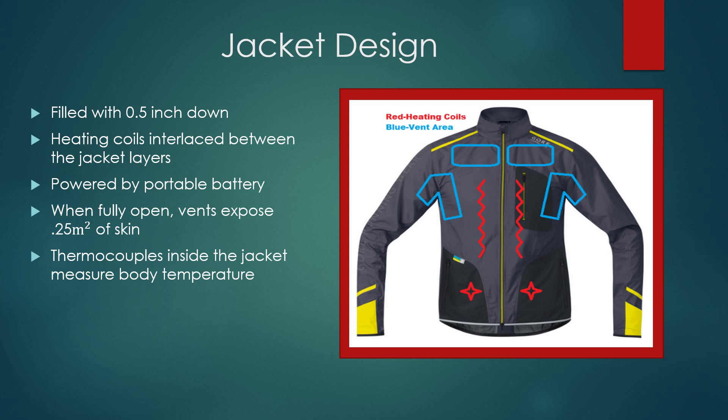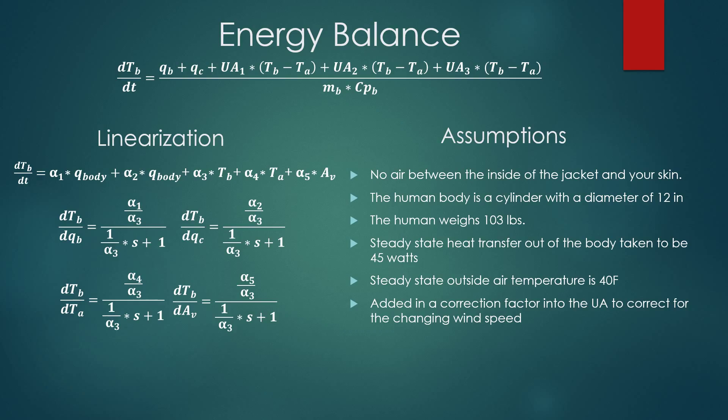All right. So I'm just going to talk a little bit about our jacket design. So as you can see, we have some heating coils in between 0.5 inches of down, and that's what's going to heat up your body. And then we also have some vents that are going to open when you want to cool down your body, when your body is providing more heat due to exertion. And we also have a thermocouple in the armpit of the jacket to measure your body temperature.